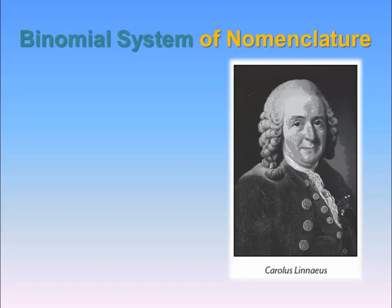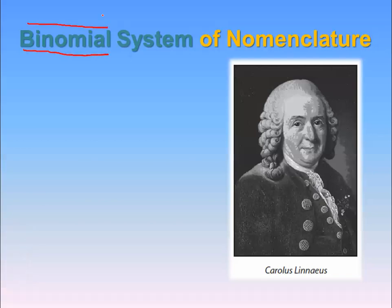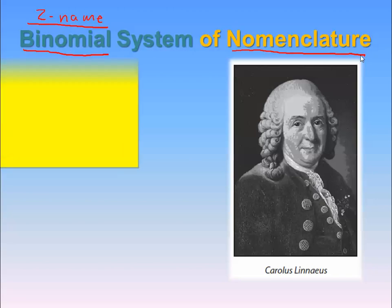So here comes this dude named Carolus Linnaeus and he comes up with the binomial system of nomenclature. That's a fancy way to say two names — binomial kind of sounds like two names — a two-name system of nomenclature, another fancy word for naming things.